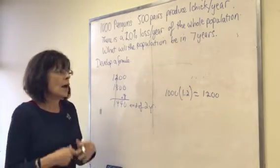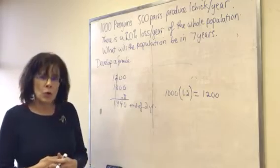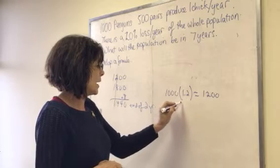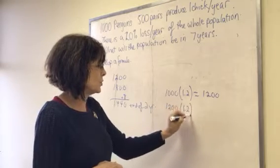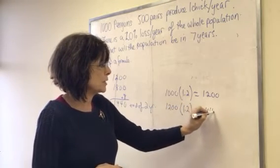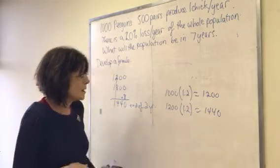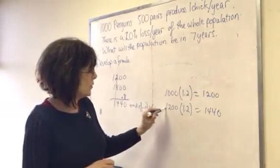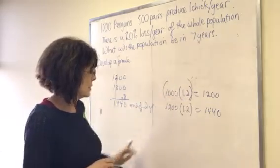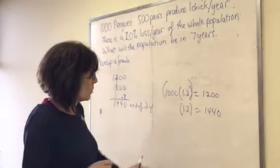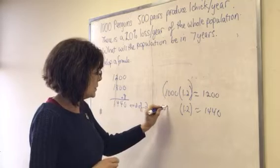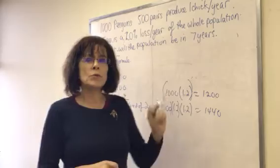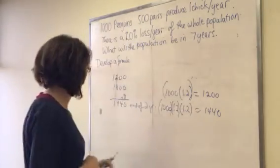Okay so could we have gotten that more quickly? Yeah if we had taken 1,200 and we had multiplied it by 1.2 we would have gotten 1440. Okay now remember 1,200 is the same as this okay we could just rewrite this as a thousand times 1.2 times 1.2 is 1,440.